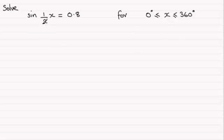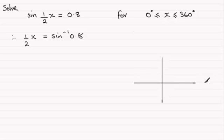So we start then by taking the inverse sine to both sides. So we therefore have that half x equals the inverse sine of 0.8. Now we've got an angle here equals the inverse sine of 0.8, and so we need to think about drawing a quadrant diagram or CAST diagram.